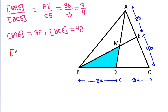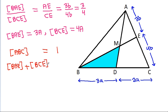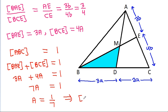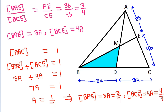And we have area of ABC is equal to 1. Area of BAE plus area of BCE equals 1, so 3a plus 4a equals 1, and 7a equals 1. So a will be equal to 1 by 7. That means area of BAE is 3a = 3 by 7, and area of BCE is 4a = 4 by 7.